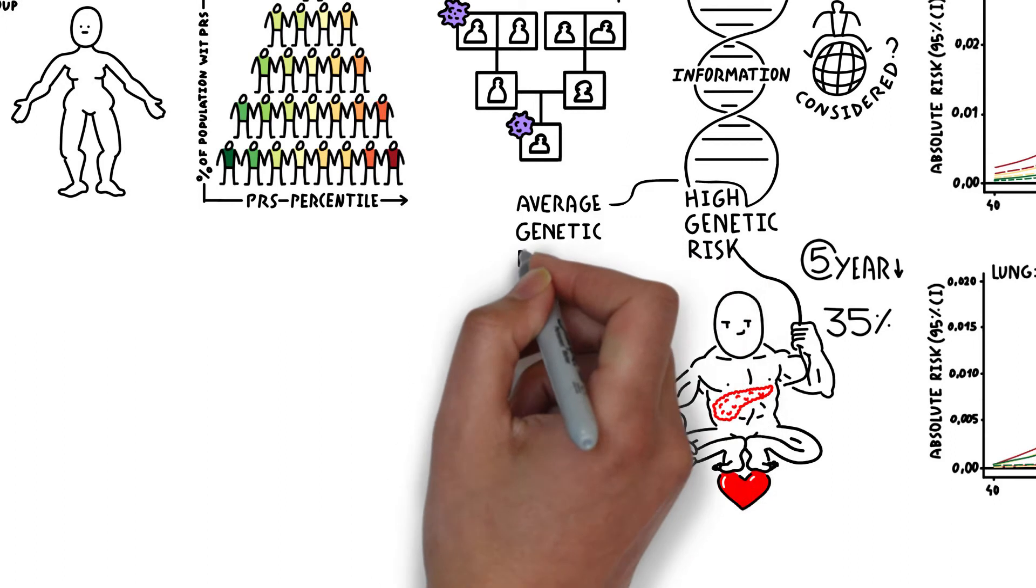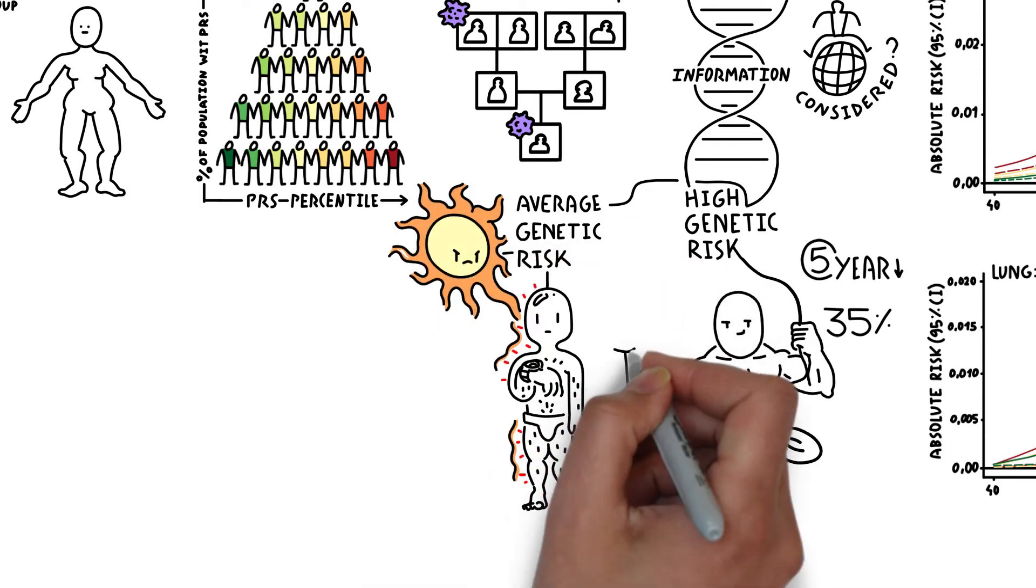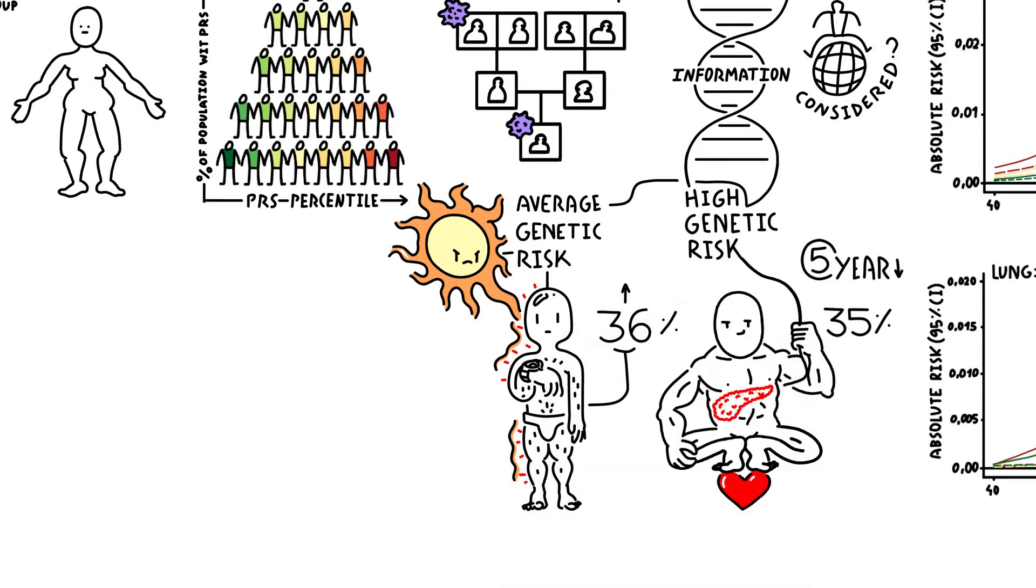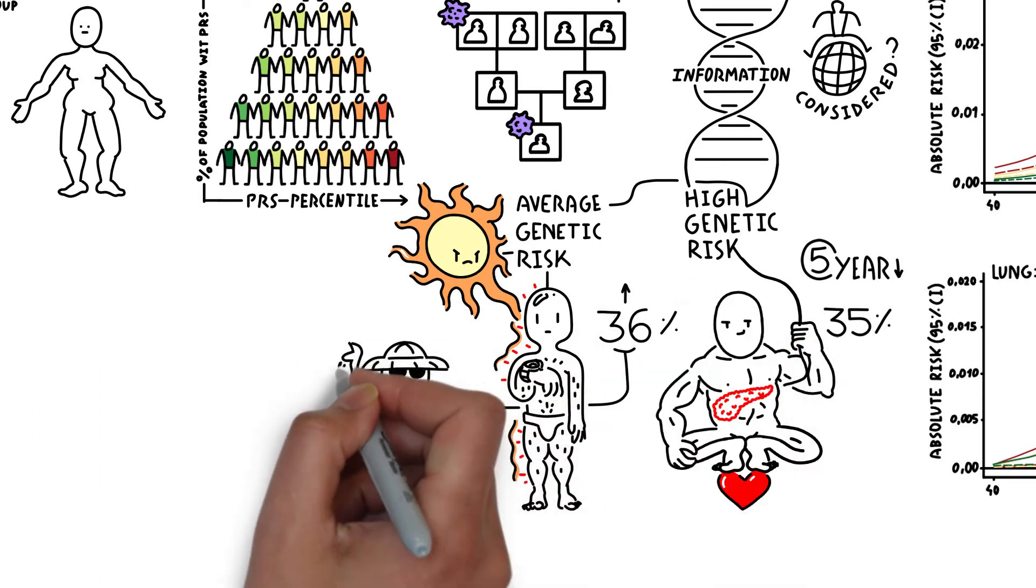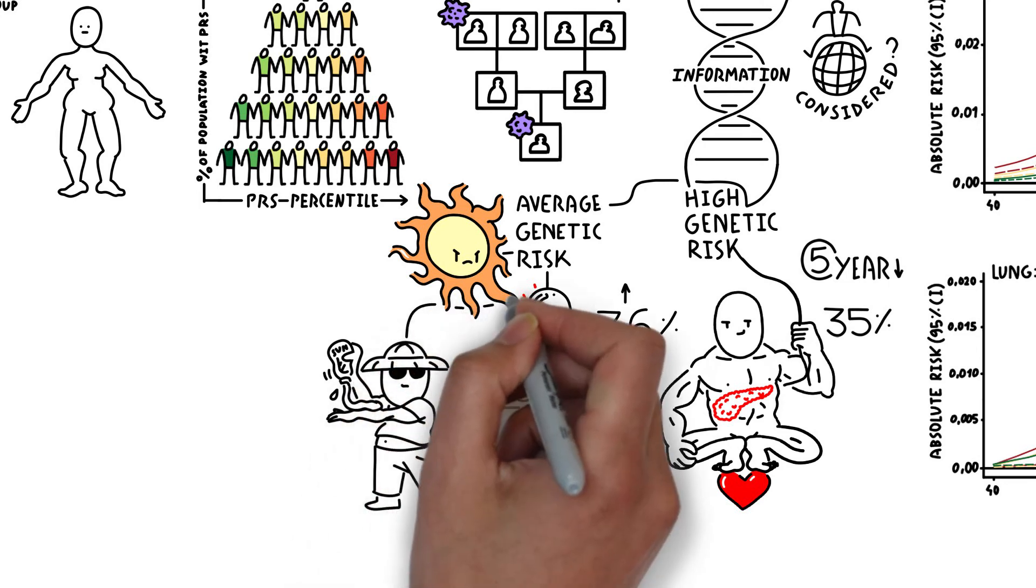On the other hand, someone at average genetic risk for melanoma who does not limit their UV exposure will have a 36% higher probability of developing this cancer than a sun safety conscious individual with the same genetic profile.